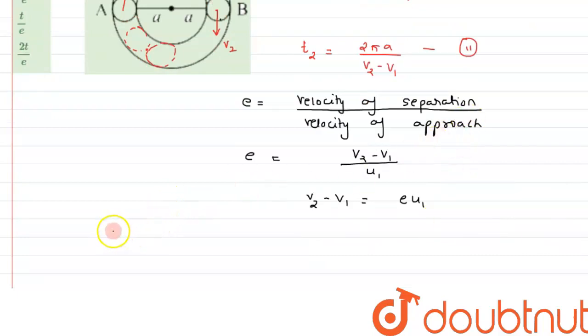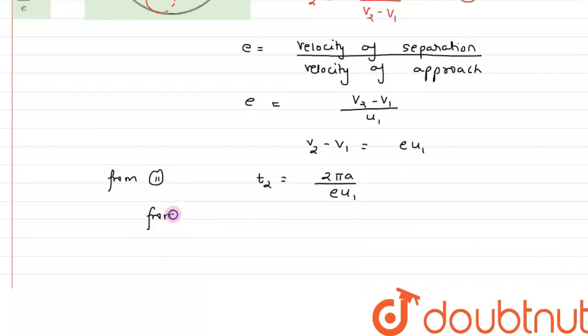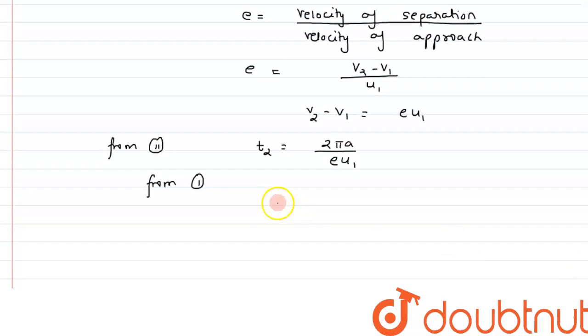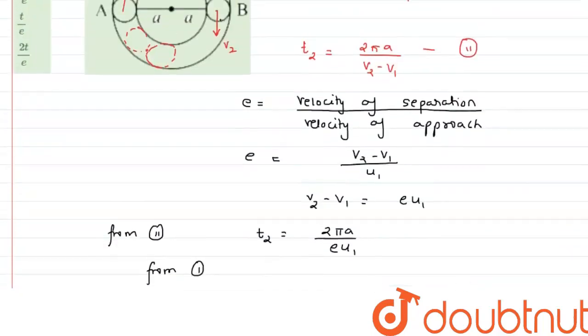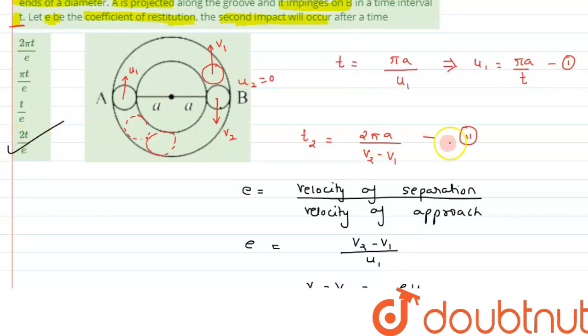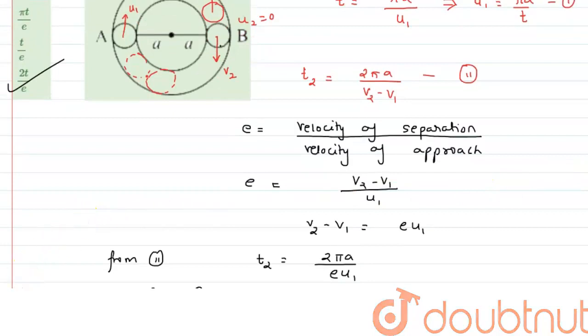If we substitute this in equation 2, from equation 2 we can write t₂ would be 2πa upon e·u₁. From equation 1, the value of u₁ is πa/t. So t₂ would be 2πa upon e times πa/t. T will be shifted to numerator, so this gives us the answer as 2t/e. This matches with option D, so this is the right answer to this question.